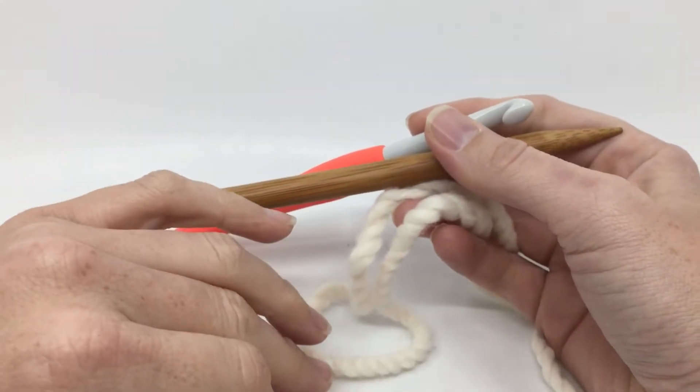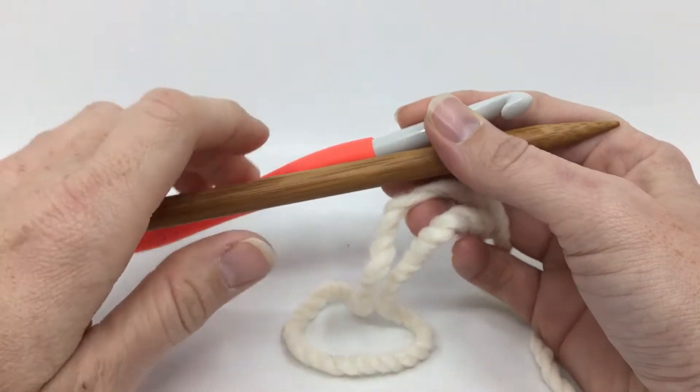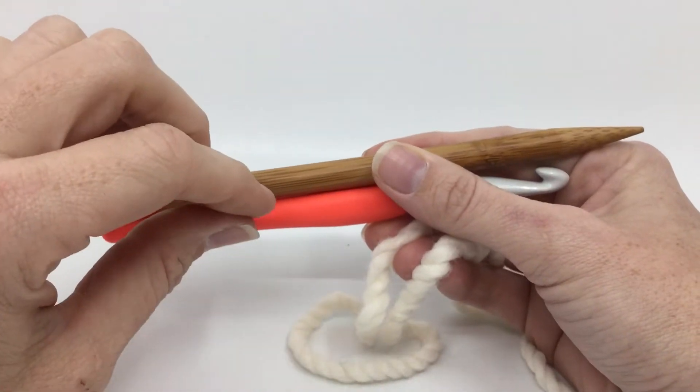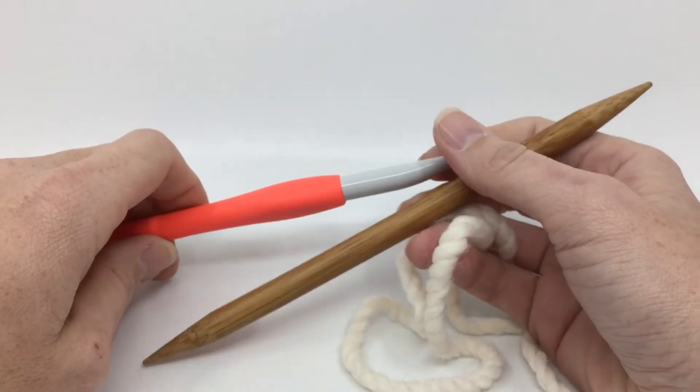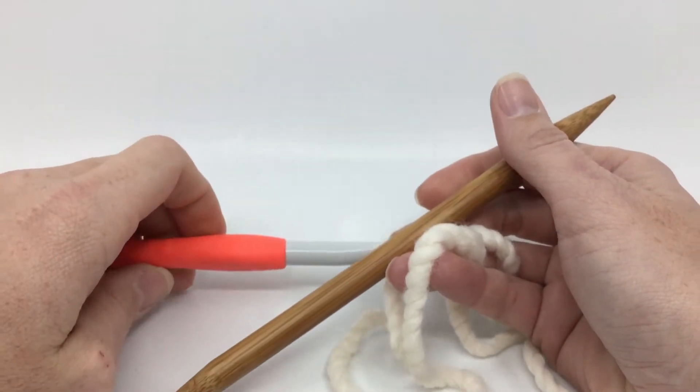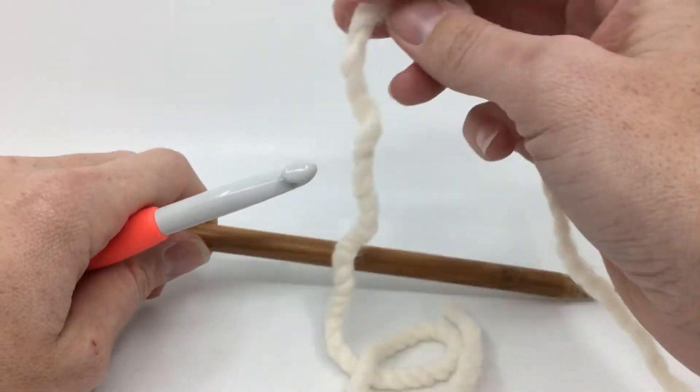Once we get some cast on, we will talk about why you would prefer to use the crochet cast on instead of, say, maybe a long tail cast on. But let's get started with casting on first and then it'll make more sense.